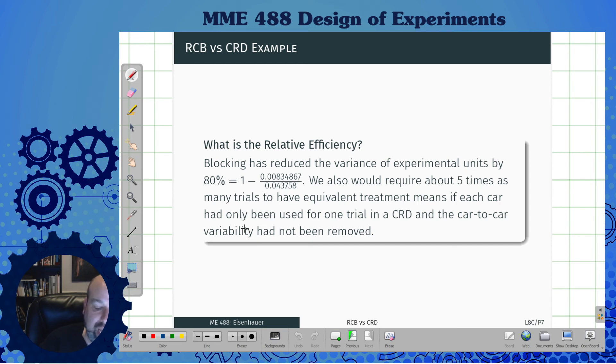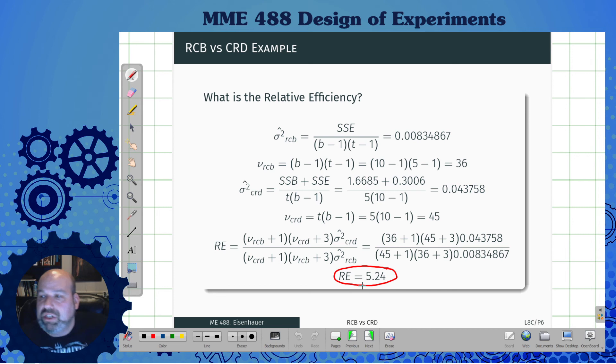In this case, blocking reduced the variance of experimental units by 80 percent. Also known as we would require about five times as many trials to have an equivalent treatment means if each car had only been used for one trial, the car to car variability had not been removed. That would cost you quite a bit. The interpretation on this is getting a relative efficiency of 5.24 means that I would have to run my completely randomized design five times more in order to actually get almost the same conclusion from a randomized control block if I'd actually done it ahead of time. This is showing you the power of randomized control blocks and how they actually calculate that efficiency.